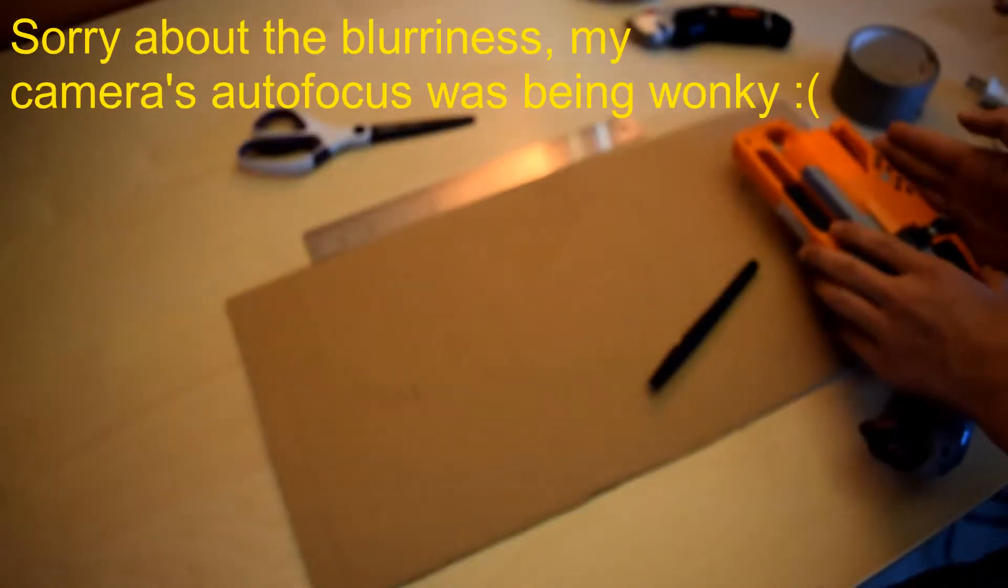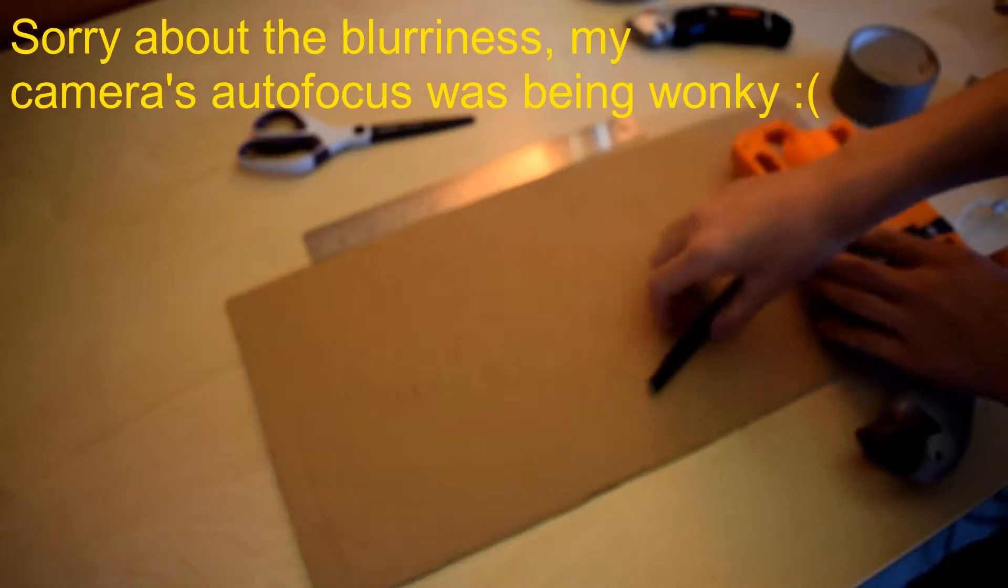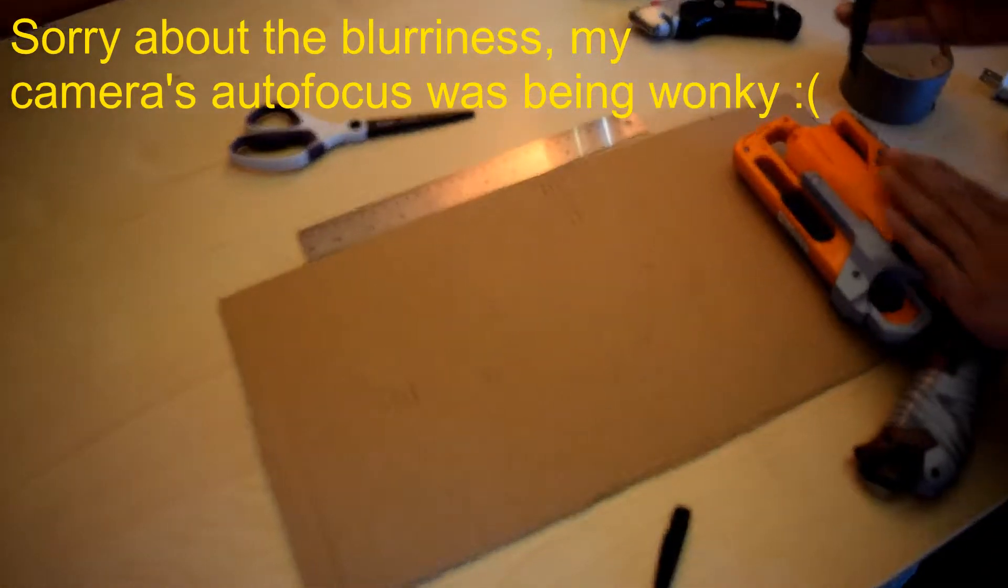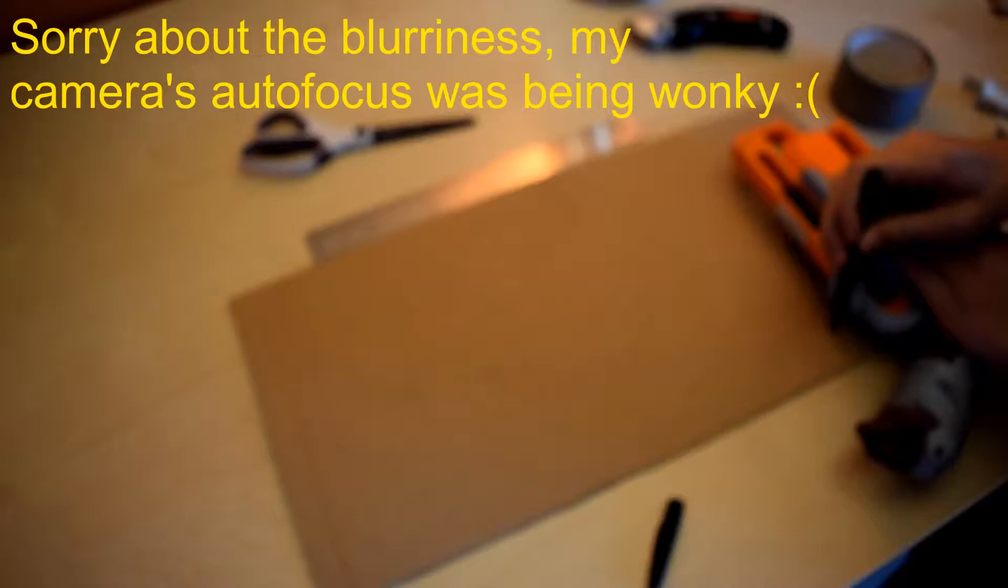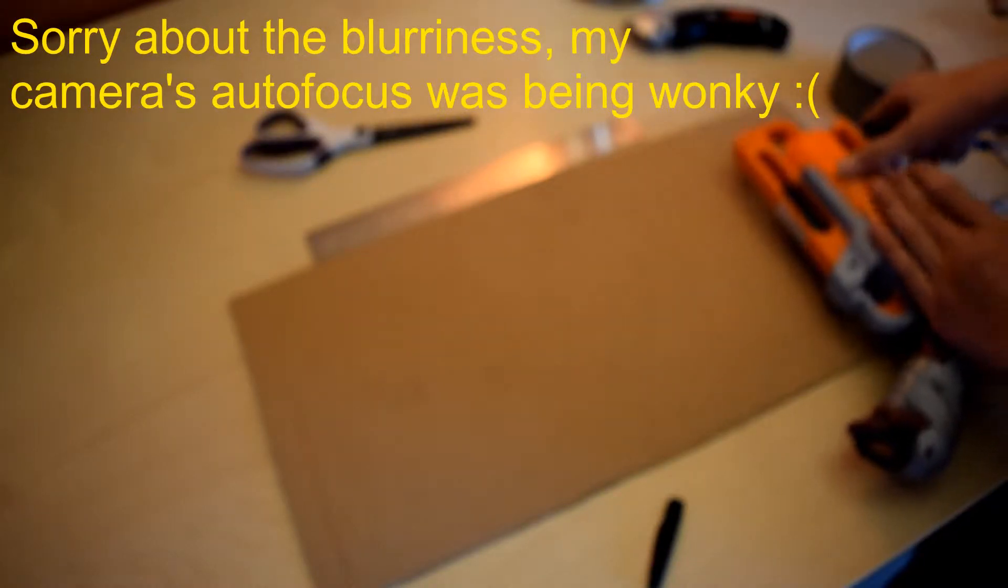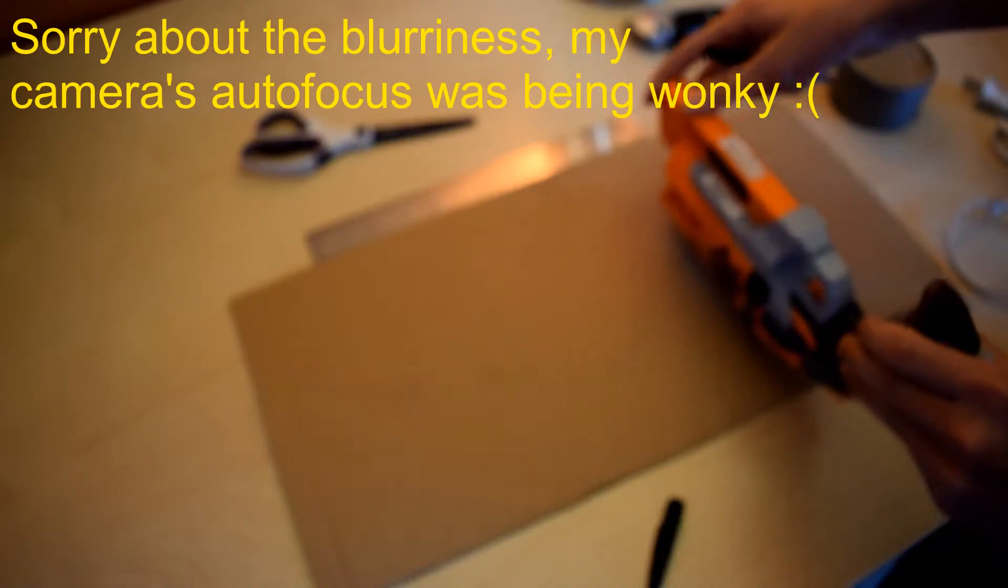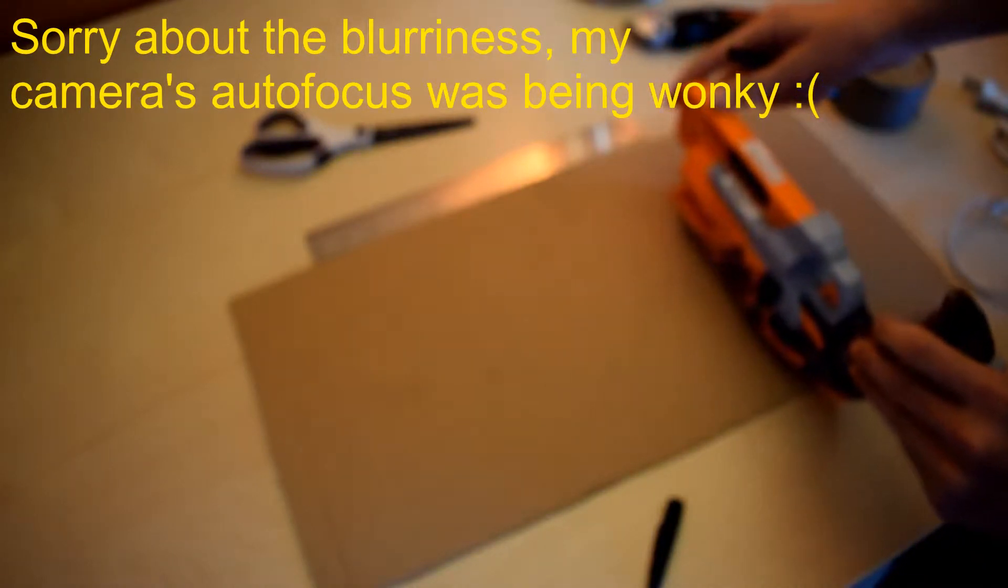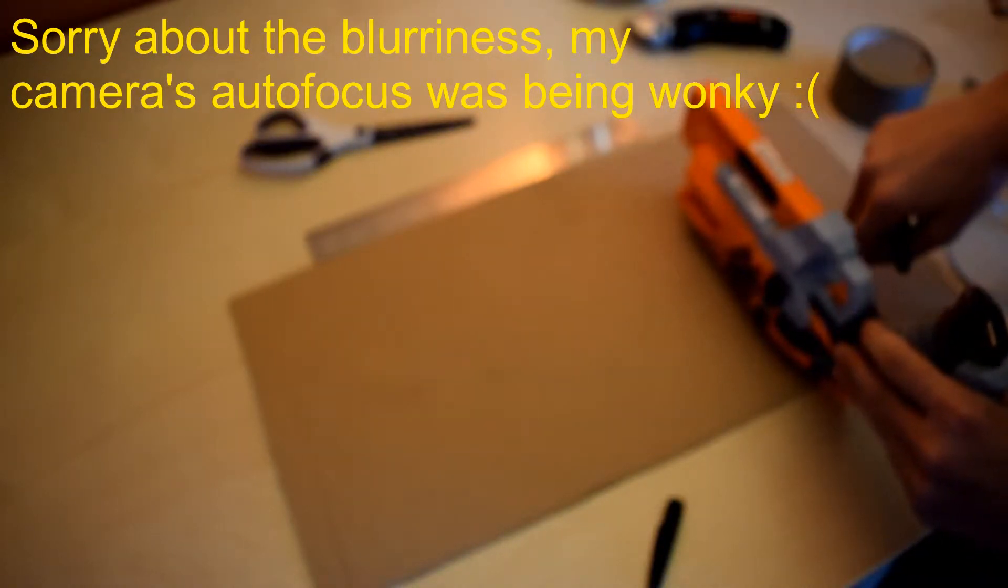Line up the top of your blaster with the edge of the cardboard, take your pen or marker, and make a rough marking along the other end. Then flip it over to the top of your blaster, line the side of the top with the marking you just made, and on the other side make a new marking.